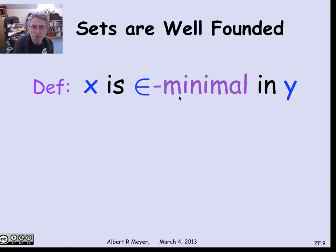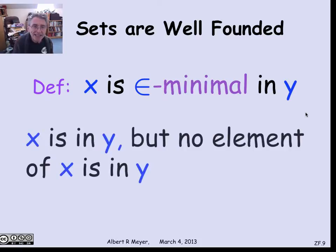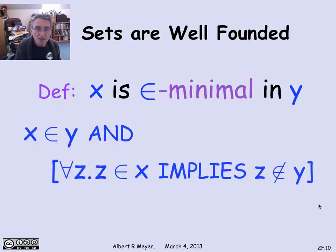Let me say that x is membership minimal, epsilon minimal in y, means that x is a member of y, but there's no element of x that's also in y. In other words, x is built out of things that are not in y, but x itself is in y. So x kind of comes before any of the other elements in y. It's built out of non-y stuff. To say this with a formula, we could just say that x is in y, and for every z, if it's in x, then it's not in y. So that's the definition that x is membership minimal in y.